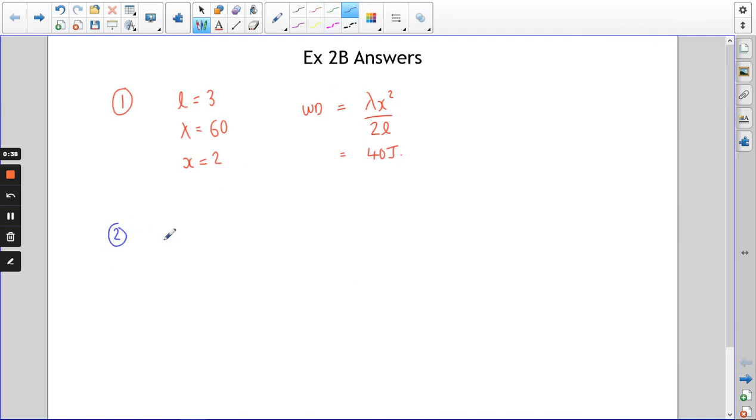Number 2, a little bit trickier actually this one, because you don't know lambda, but you've been given some information to work it out. I can't remember if I've mentioned this or not, but lambda is the newtons required to double the length of something, or to extend it by its original length. So if a spring's got a lambda of 30, it means if you apply 30 newtons, a spring will be twice as long, the extension will be equal to the length.